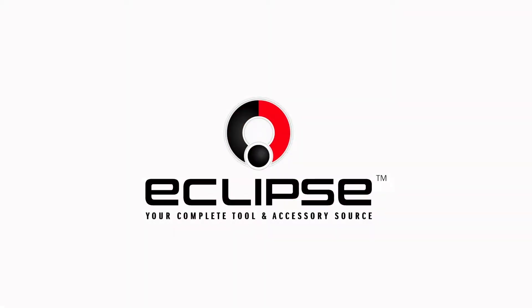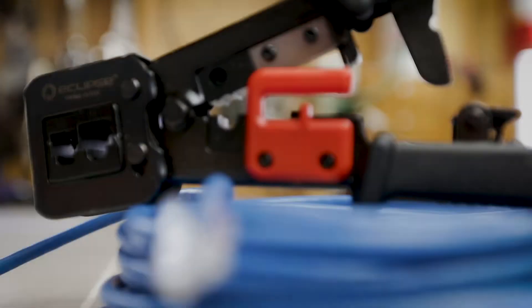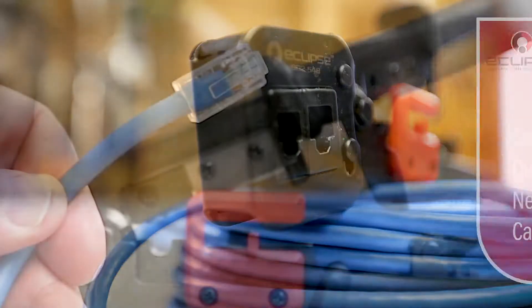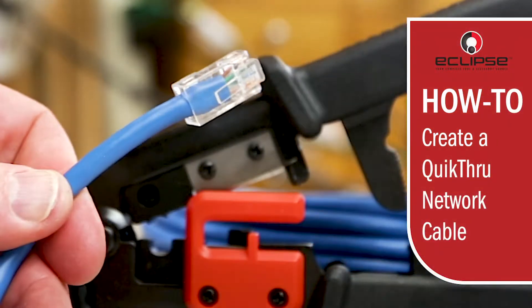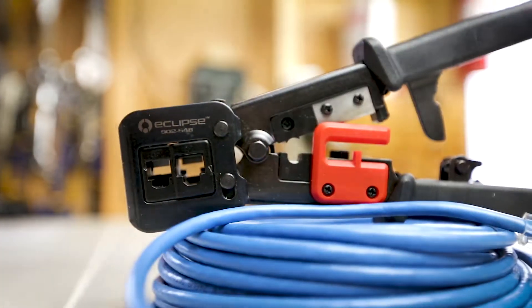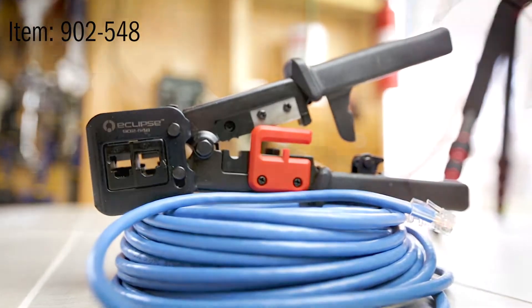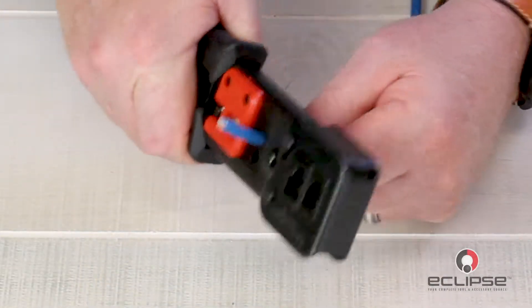Eclipse Tools. In this video, we're going to show you how to save time and prevent mistakes creating networking cables with Eclipse Tools' easy-to-use Quick Through crimp tool and accessories. To get started, strip the cable's jacket with the round cable stripper.